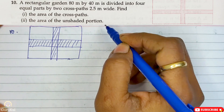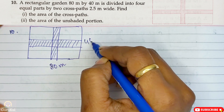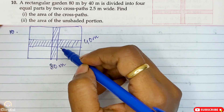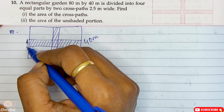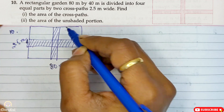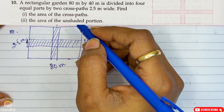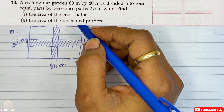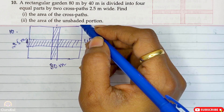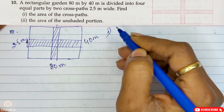Now question number 10. A rectangular garden 80 meters by 40 meters is divided into 4 equal parts by 2 cross paths, and the thickness (width) of the paths is 2.5 meters all over. The first part of question 10, we need to find the area of the cross path, and the second part is to find the area of the unshaded portion.